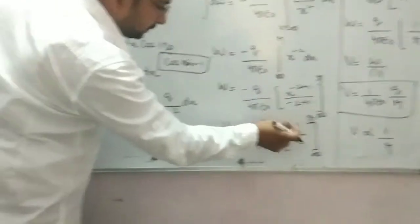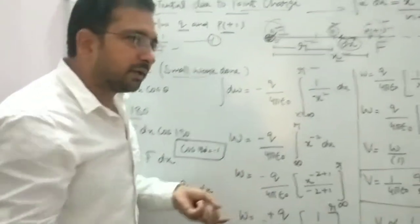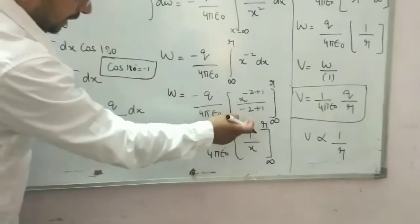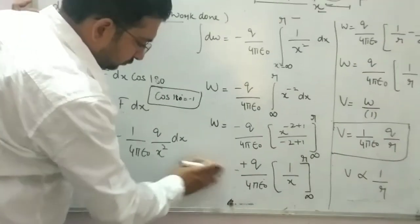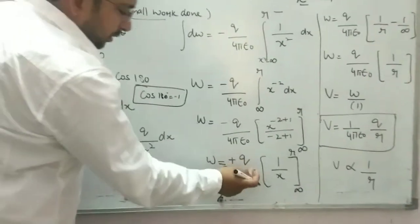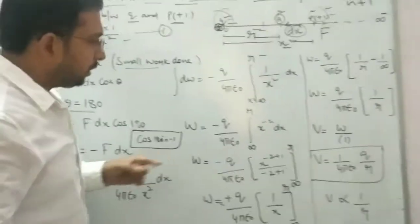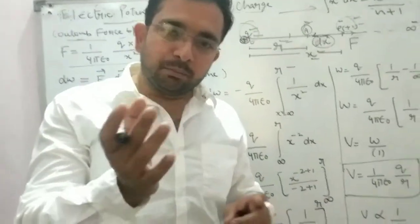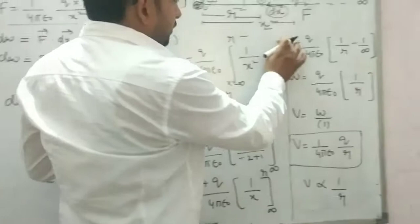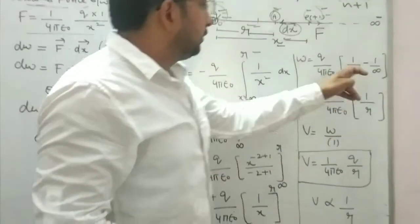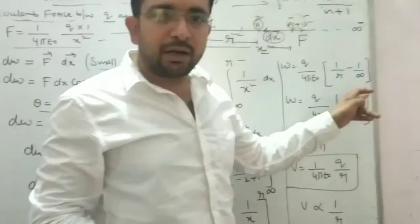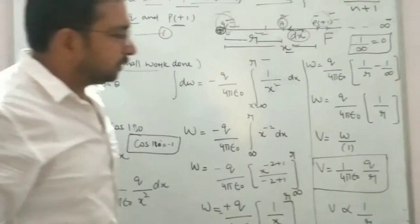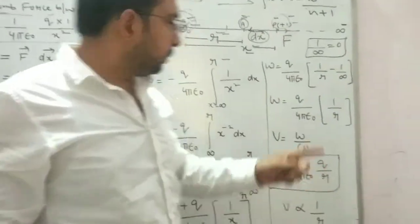Applying the limits — upper limit minus lower limit: W = (Q/4πε₀) × [1/r − 1/infinity]. Since 1/infinity equals 0, this simplifies to W = (Q/4πε₀) × (1/r).